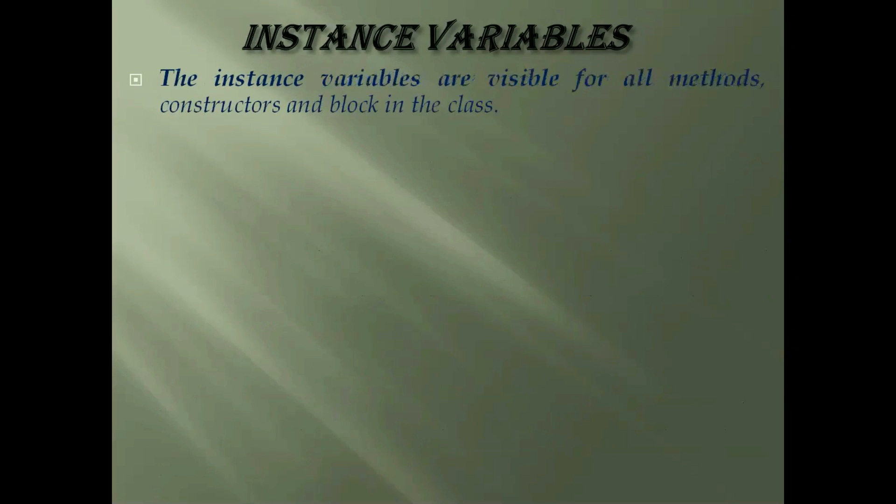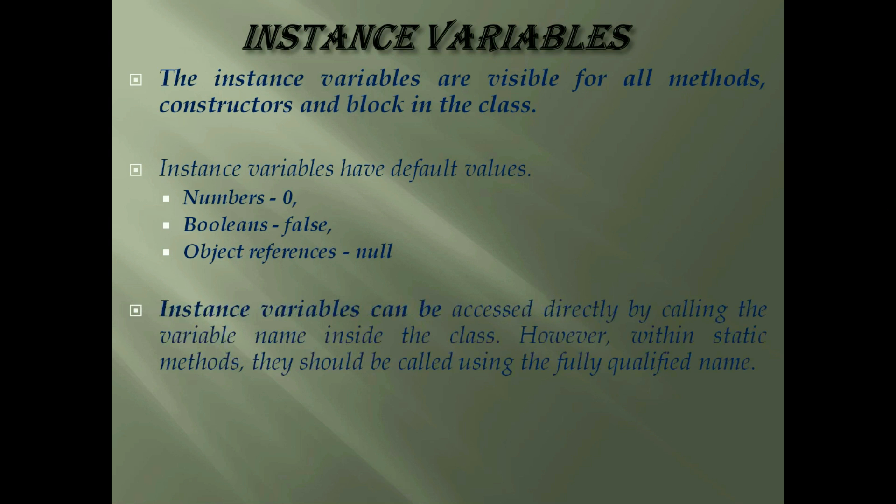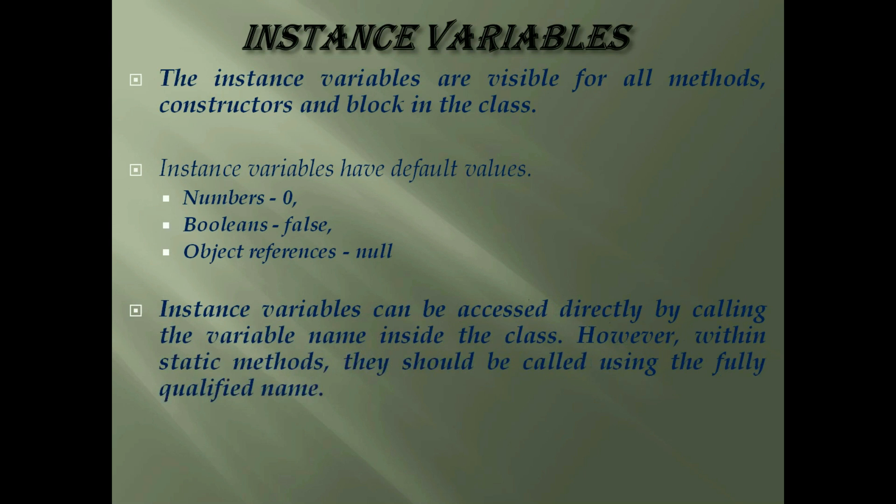The instance variables are visible for all methods, constructors and block in the class. Normally, it is recommended to make these variables private. And instance variables have default values. For numbers, the default value is 0. For boolean, it is false. And for object reference, it is null. Values can be assigned during the declaration or within the constructor. Instance variables can be accessed directly by calling the variable name inside the class. However, within static methods, when instance variables are given accessibility, they should be called using the fully qualified name like object reference dot variable name.